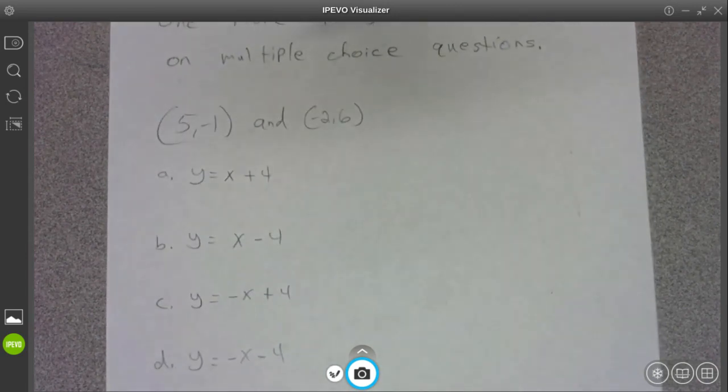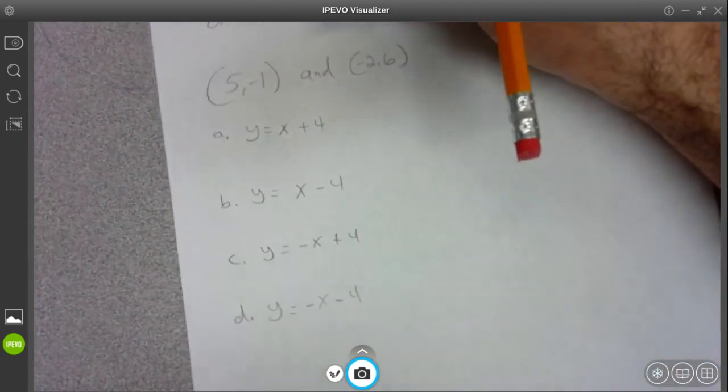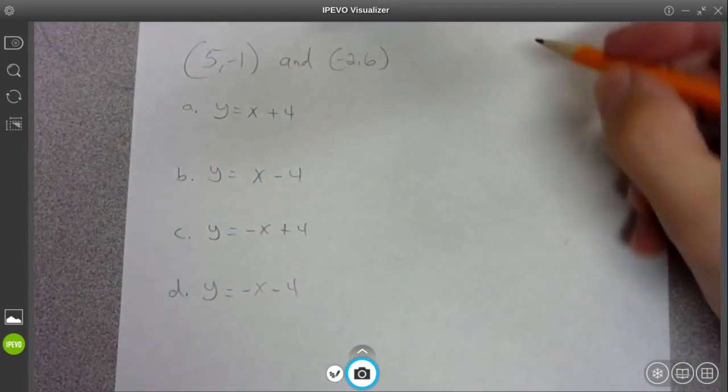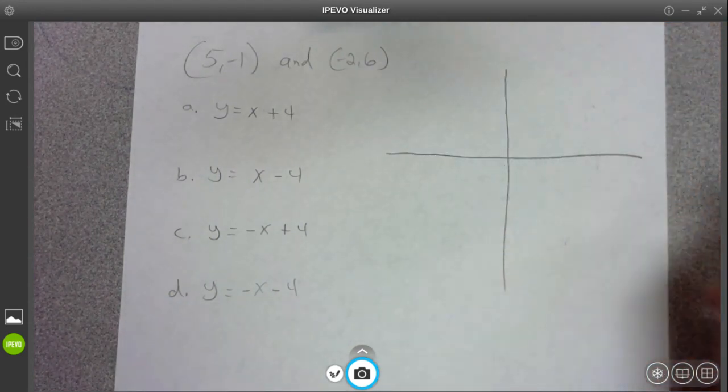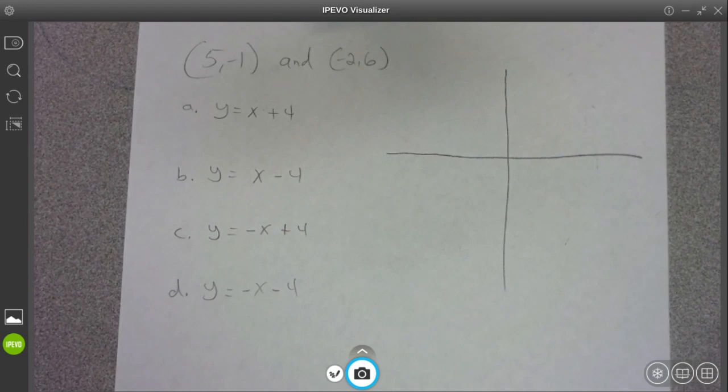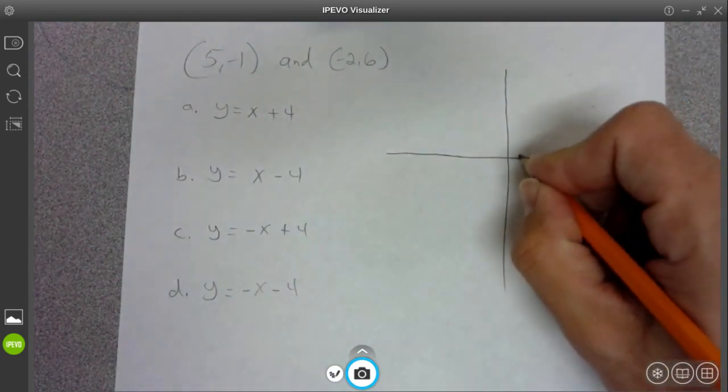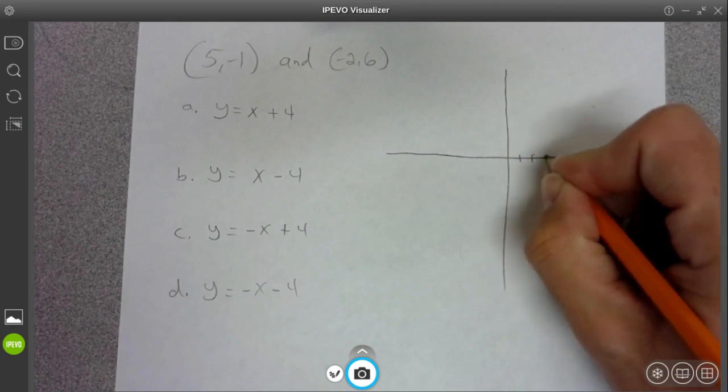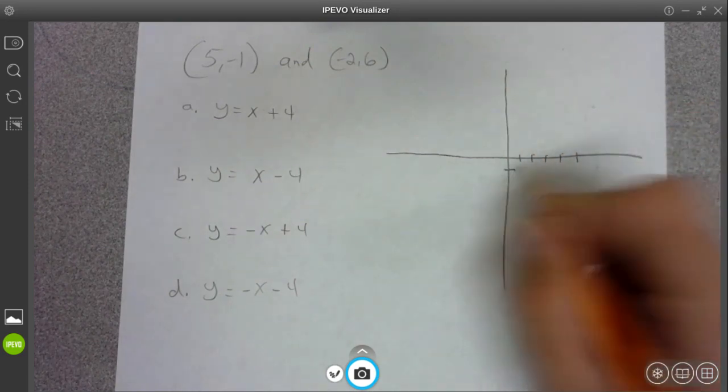So what I'm going to do is I'm actually just going to plot these two points. Alright. So if you have some graph paper, this is a lot easier. If you're using Desmos for some reason, it'd be even way easier. Alright. Five, negative one. So two, three, four, five. And then negative one right there.